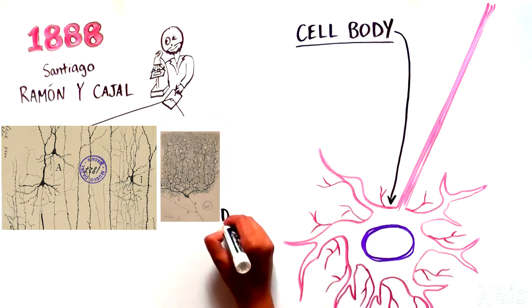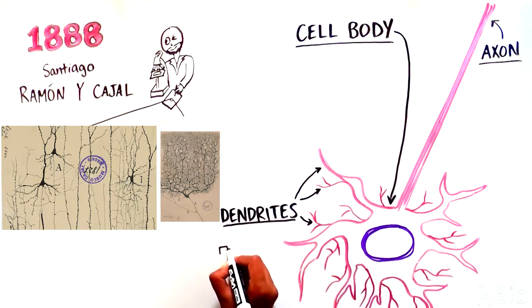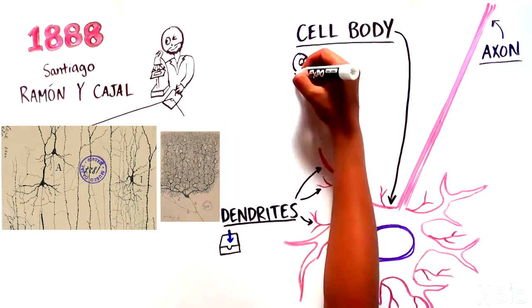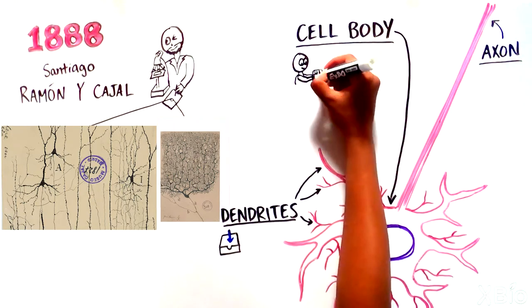The cell body, the dendrites, and the axon. You can think of the dendrites as the inbox of the neuron, the cell body as the person reading the email and formulating a response, and the axon as the outbox.